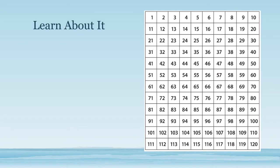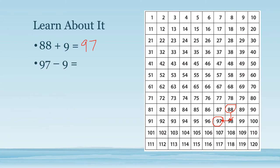Now that we've discovered the pattern of adding or subtracting 9, let's try to use that pattern to find an answer fluently — very quickly and easily. We'll use what we know about adding and subtracting 10 to help us add and subtract 9. Let's try with 88 plus 9. Instead of adding 10 to 88, I'll add one less, which would be one space before. So 88 plus 9 is 97. Now let's do it with 97 minus 9. Instead of subtracting 10, I'll subtract one less than that, which would be 88. So 97 minus 9 equals 88.